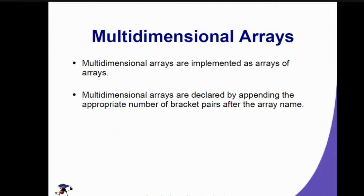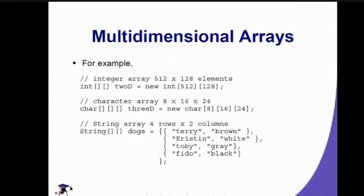A two-dimensional array looks like a table. For example, we have an integer array of 512 rows by 128 elements — that is a large two-dimensional array. We also have a character array which has 8 by 16 by 24 — that's three-dimensional. And we have a string array for four rows by two columns — the smallest example, with constant initialized values. Let's start with the smallest — four rows and two columns.